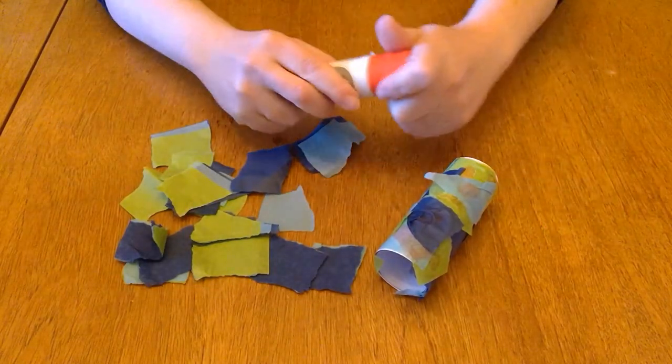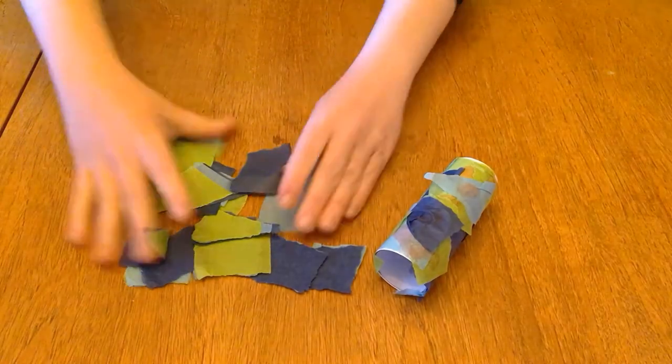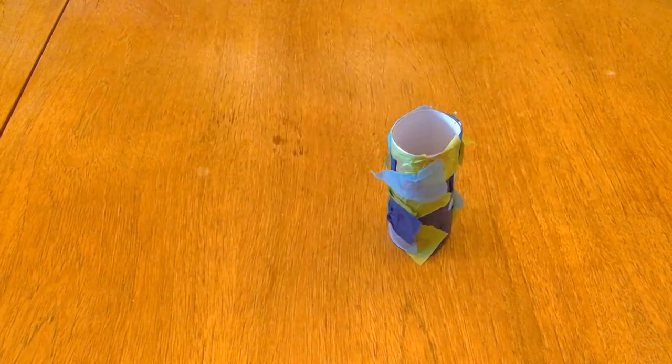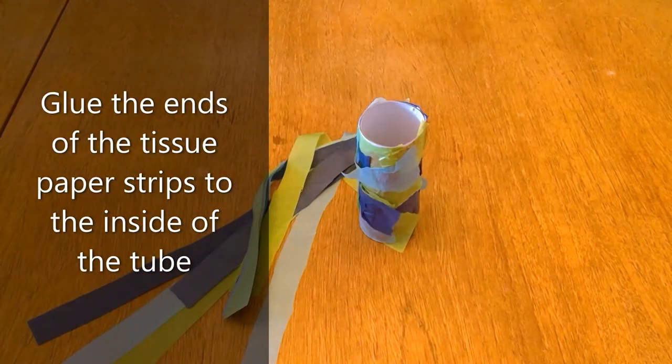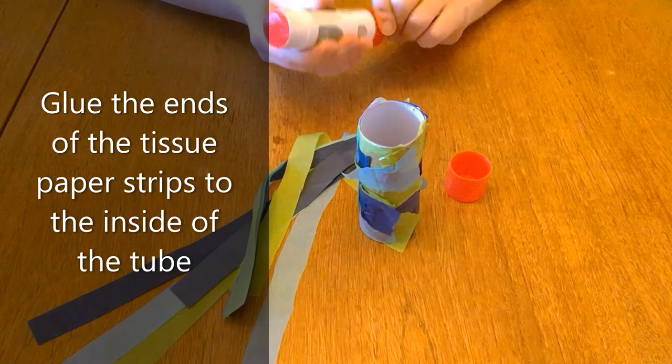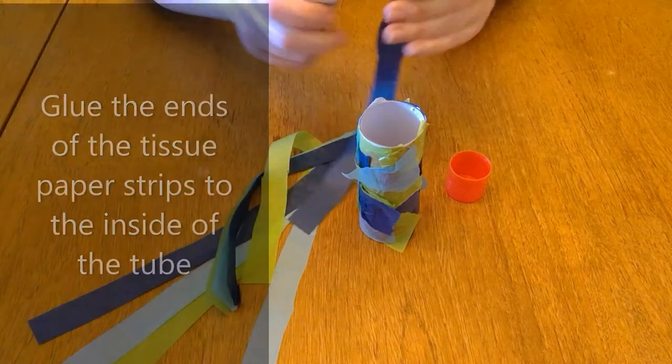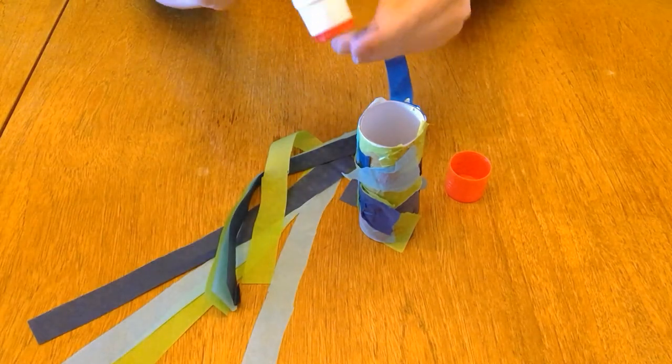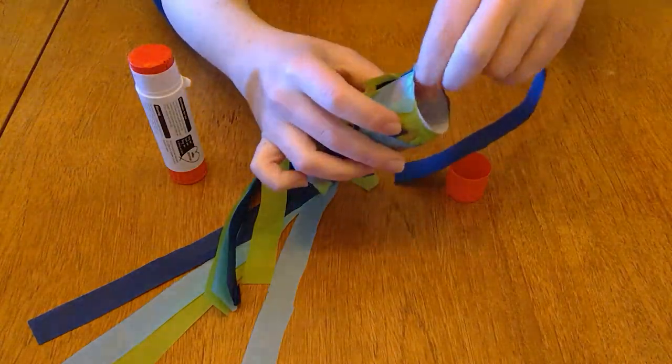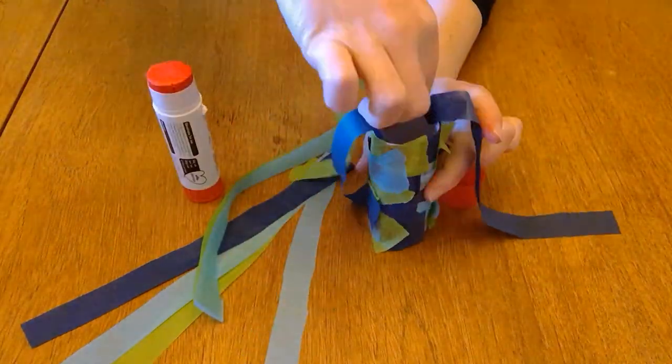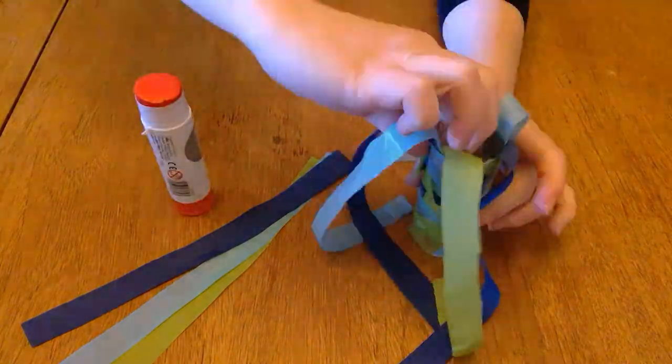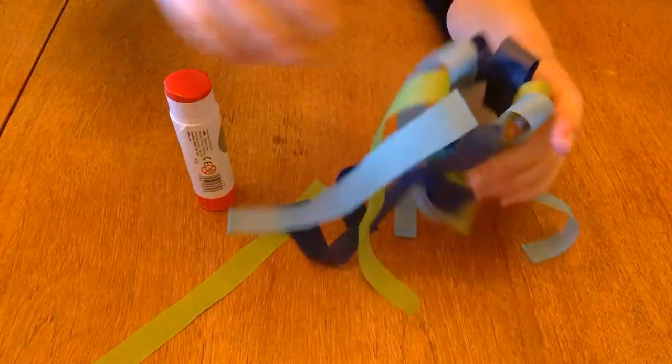So that's finished. I'm going to go back to the strips of tissue paper I cut earlier, and I'm going to put some glue on the ends of each strip and then stick them onto the inside of the tube at one end, so that it's kind of giving our cardboard tube a tail. I'm going to go round and stick them all the way around my cardboard tube.